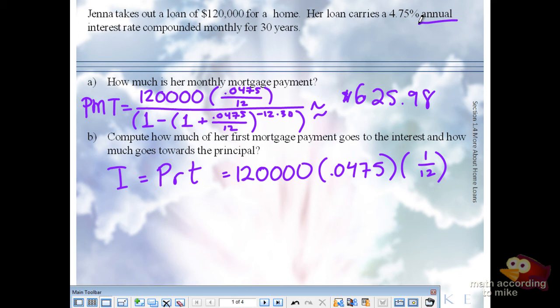So for the first month's payment, I got 475. Can anyone confirm that? So let the moaning begin. Again, $475 of your payment went towards interest. Your payment was 625.98. So to figure out how much went towards principal, we would do 625.98 minus 475.